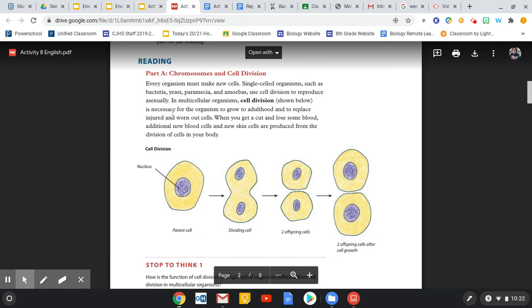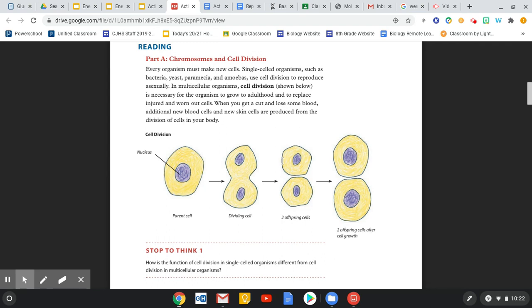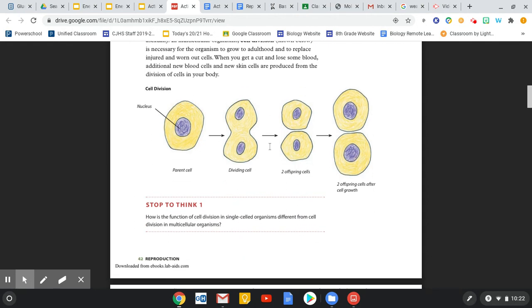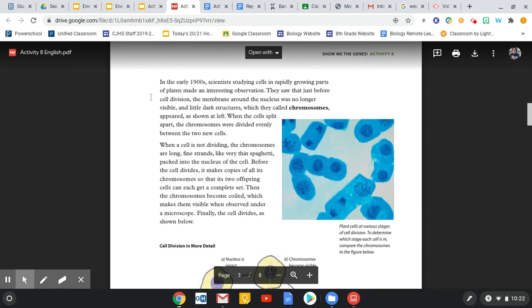Now when we're talking about this type of cell division, it's one cell going into two cells, and that is something called mitosis. There's another type of cell division that we will be talking about, but this particular cell division is called mitosis. So I'm going to skip the stop to think and go on.